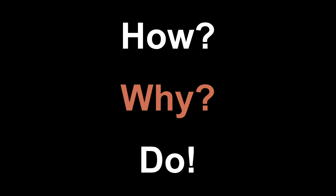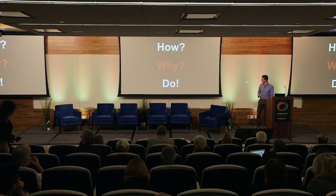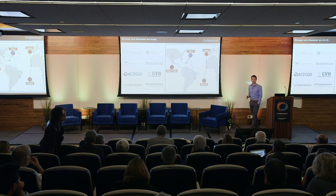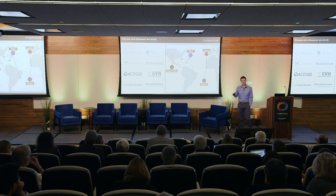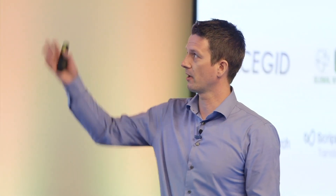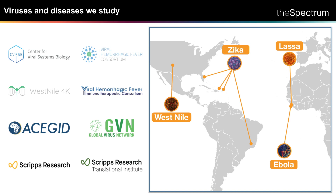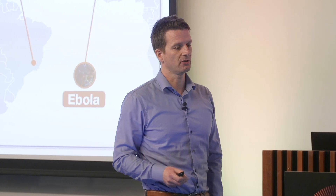We don't work on flu, at least not yet. The four main viruses we work on are: Lassa and Ebola, which we work on in West Africa — we actually work with the viruses where they are, with patients primarily in Sierra Leone but also in Nigeria. We also work on Zika, and more recently we have started working on West Nile, which is mostly focused here in the United States.